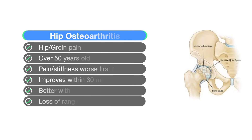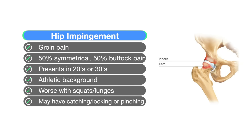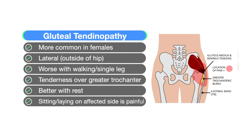Here's a concise summary of all three conditions. Hip OA: hip or groin pain, over age 50, pain or stiffness worse in the morning and gets better after 30 minutes, better with rest, and there's a loss of range of motion. Hip impingement: groin pain, half the time symmetrical and half the time with buttock pain, often presents between 20 and 30 years old in people who played sports, worse with squatting and lunging, and the person may have catching, locking, or pinching of the hip. Gluteal tendinopathy: more common in females, pain on the lateral outside of the hip, often worse with walking or single-leg exercises, tenderness over the greater trochanter, and sitting or laying on the affected side is often painful.